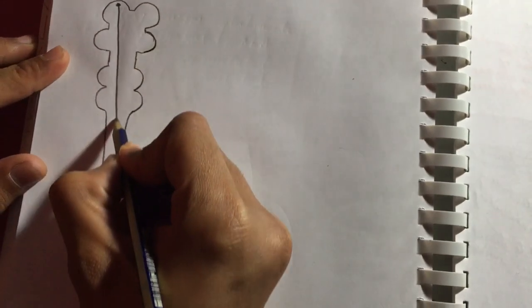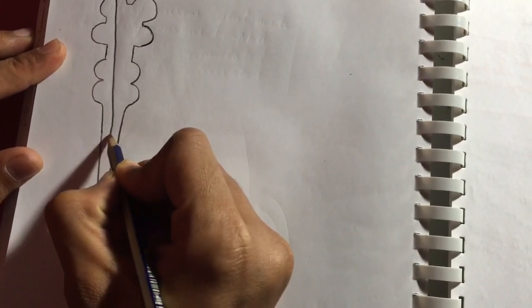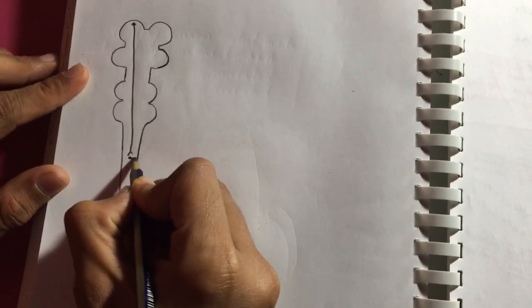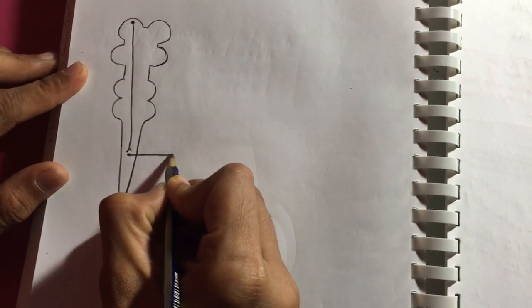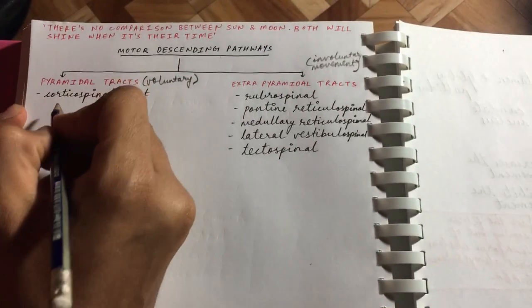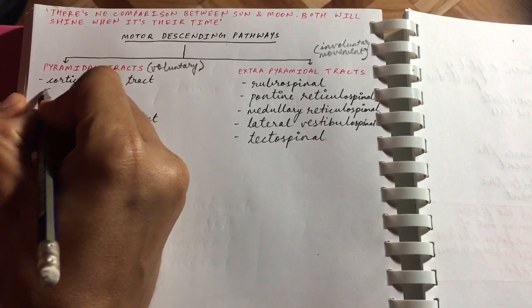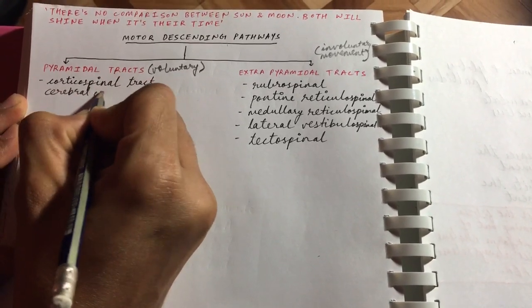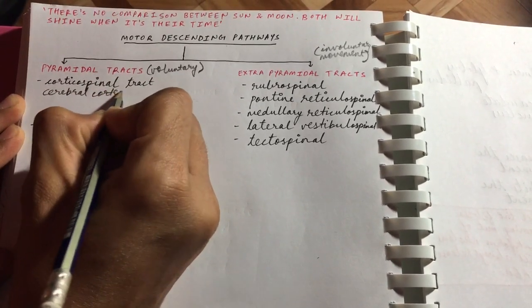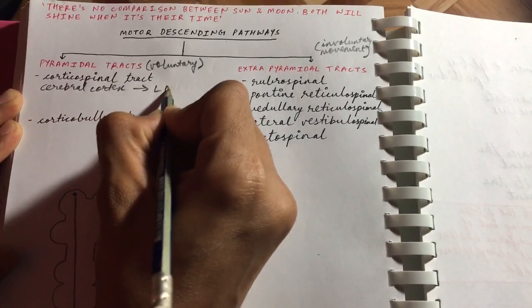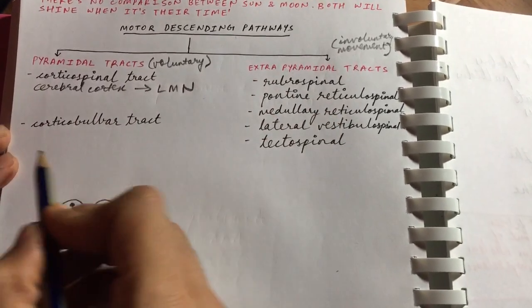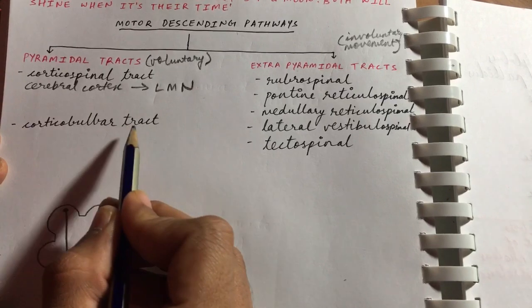The corticospinal tract starts from the cerebral cortex and connects with the lower motor neuron of voluntary movement.